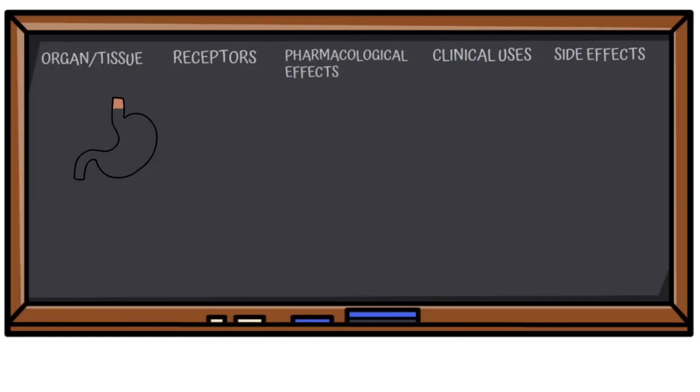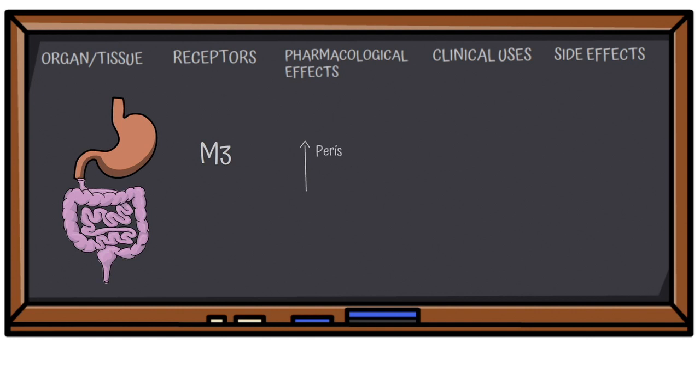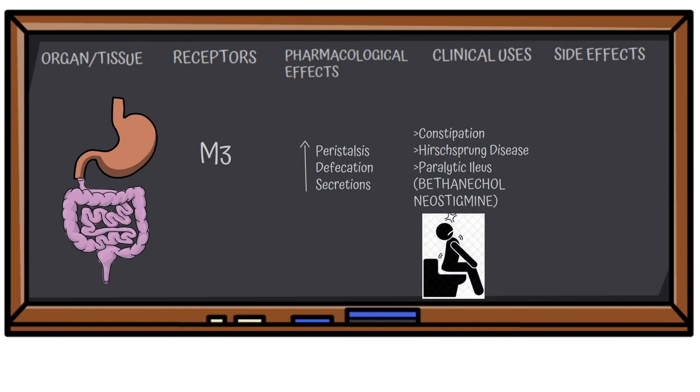In the gastrointestinal system, M3 receptors are present which cause increase in peristalsis, increased defecation, and increase in secretions. This can be a clinical use in patients who have constipation, Hirschsprung disease, or paralytic ileus. Bethanechol or neostigmine can be used in these cases. In otherwise normal patients, it can cause diarrhea because of increased peristaltic movement.